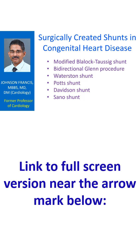The Sano shunt uses an extracardiac allograft-walled conduit directly from the right ventricle to the pulmonary artery. The Sano shunt avoids the reduced diastolic blood flow in the coronary circulation which can be associated with the Blalock-Taussig shunt.